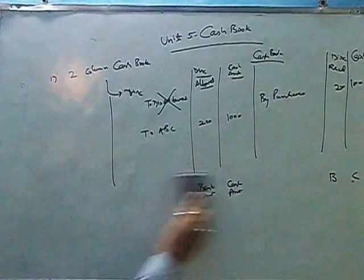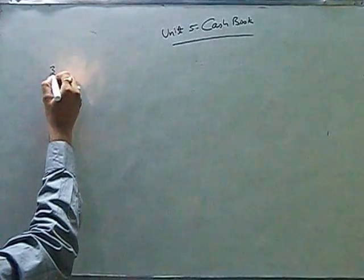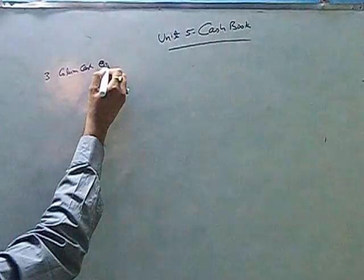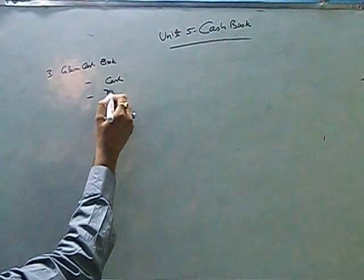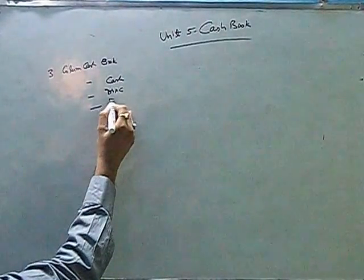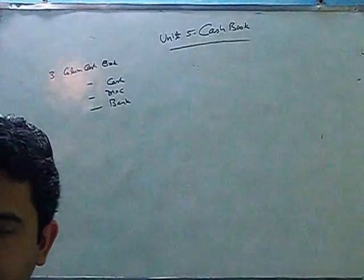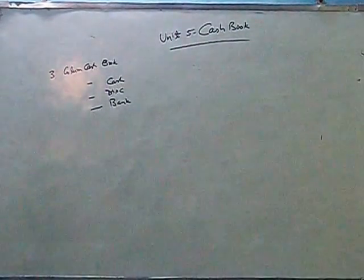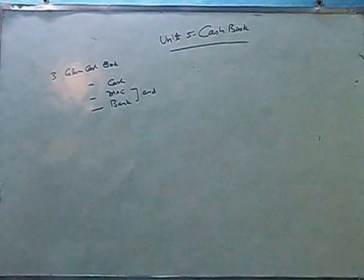So this was a two column cash book. Now this was a three column cash book. Three column cash book. We will have columns for cash, discount and bank. So it is nothing but the similar way we have prepared the two column cash book. We will add columns for discount and bank. Remember in case of our two column it was either discount or bank that we have selected.